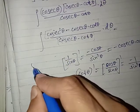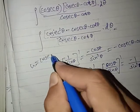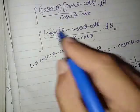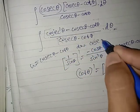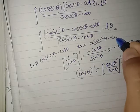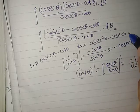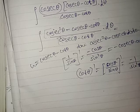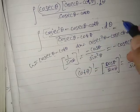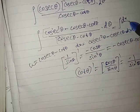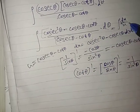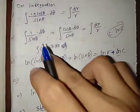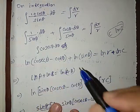We can show this by letting u = cscθ − cotθ, then du = (csc²θ − cscθ cotθ) dθ. This puts the integral in the form du/u, whose integral is ln u. So the integral of 1/sinθ is ln|cscθ − cotθ|.